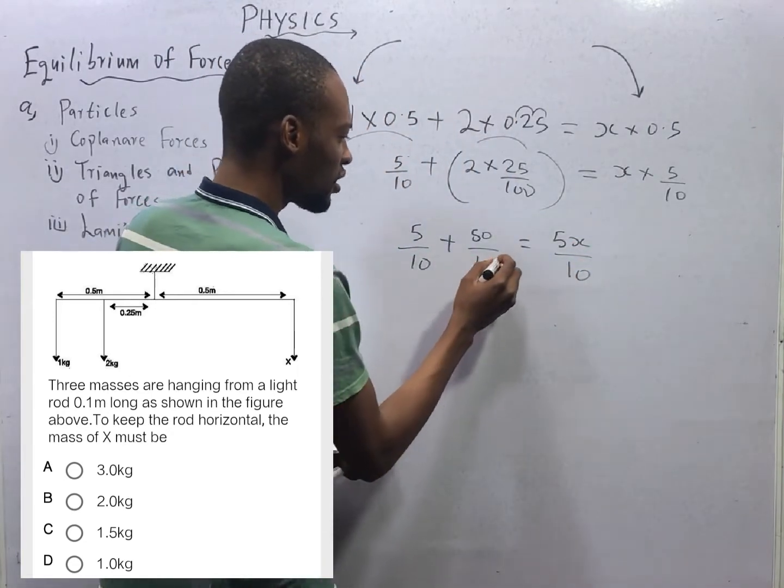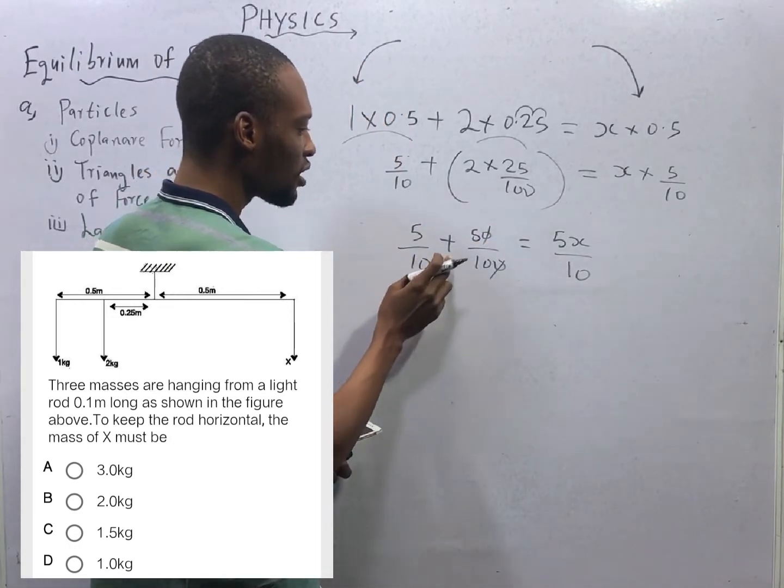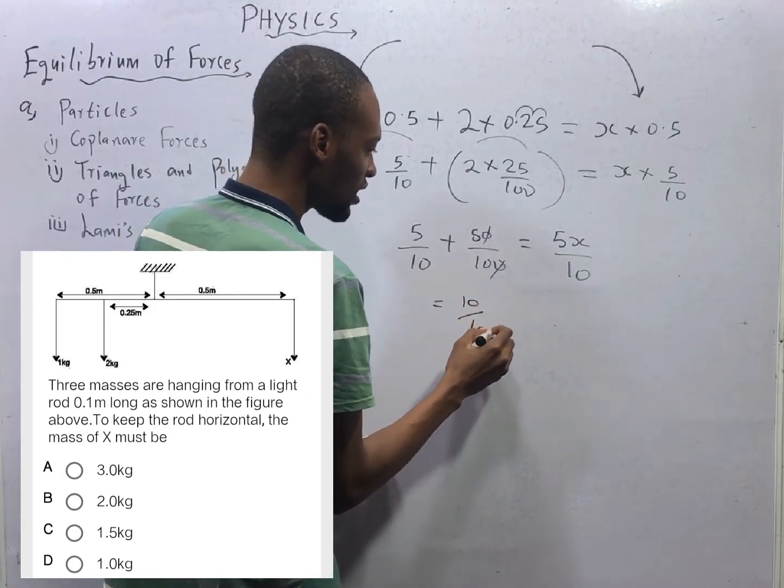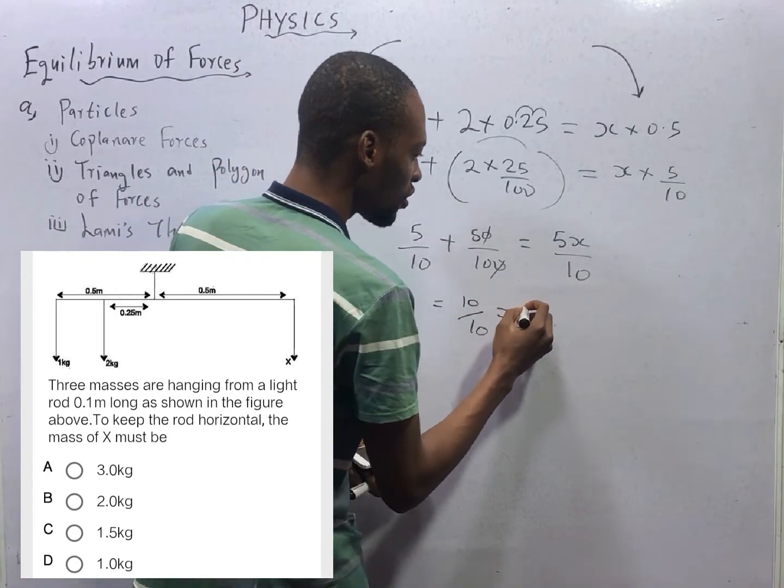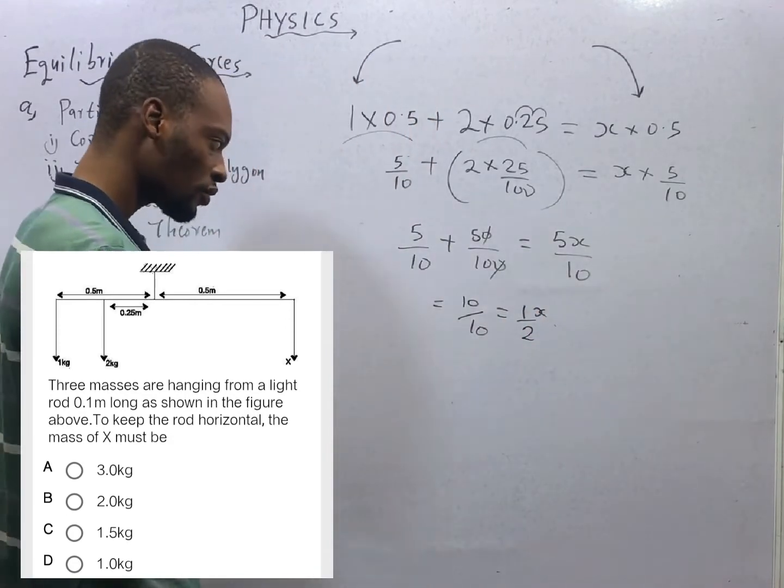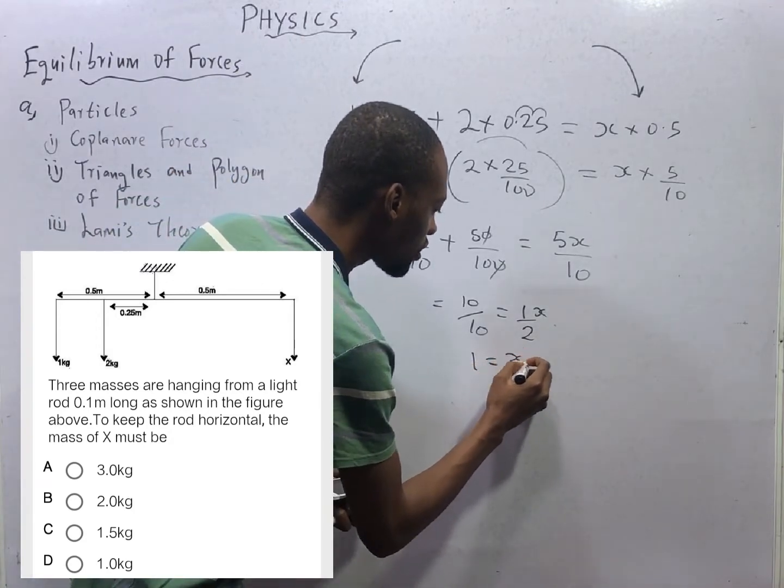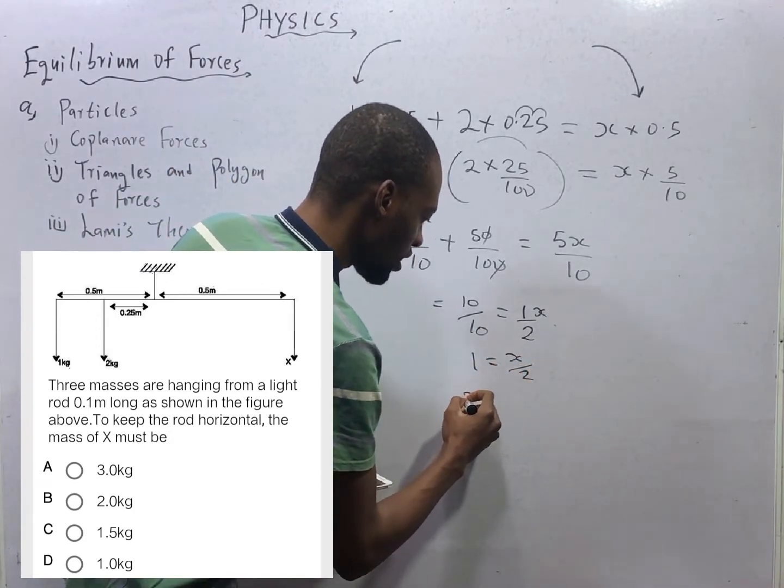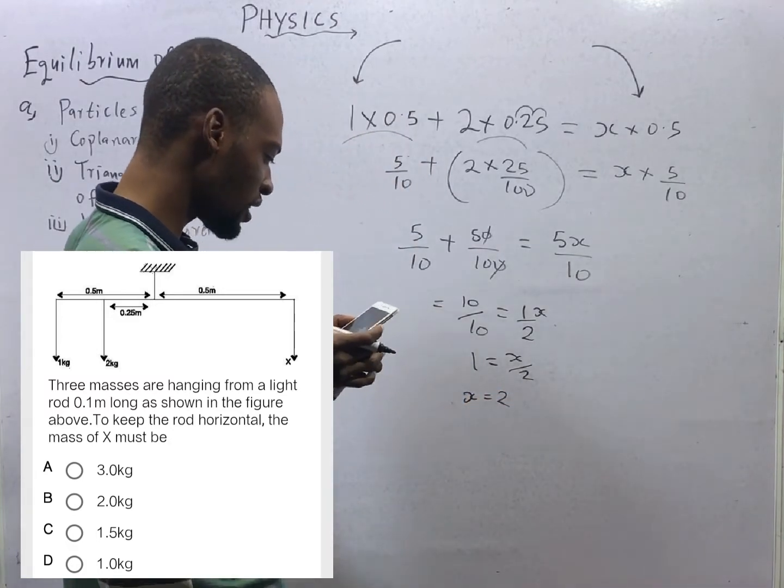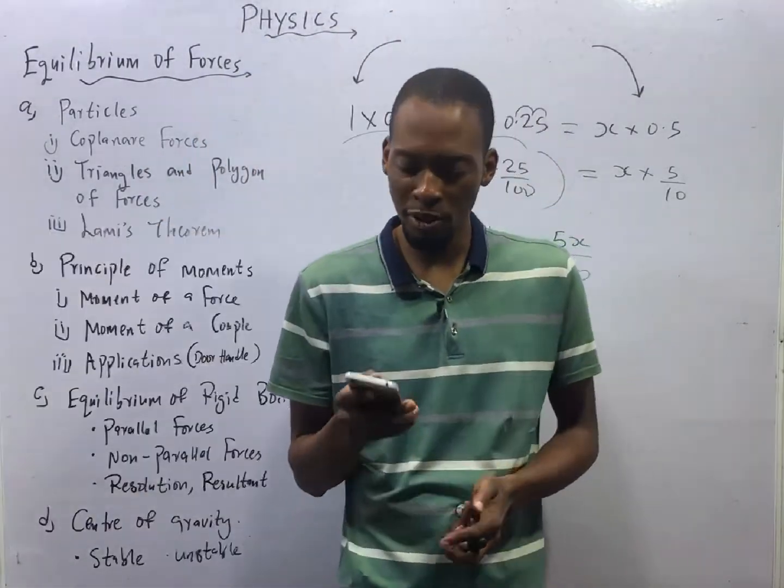From here, 10 cancels 10. We are left with 5 over 10 plus 5 over 10, 25 over 10, that will give you 10 over 10 equals 1 over 2S. 1 equals S over 2. S is therefore equals 2. So 2 kg is the correct option.